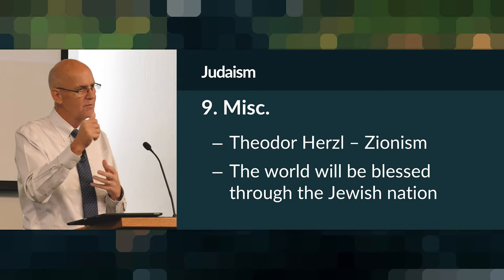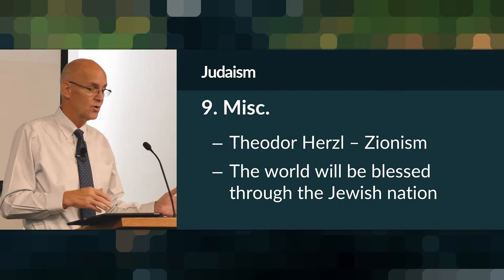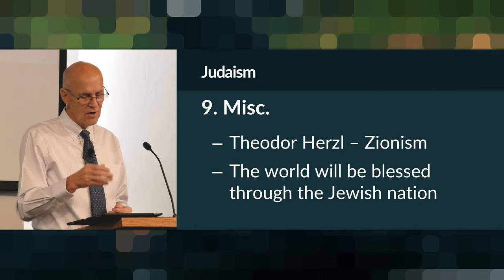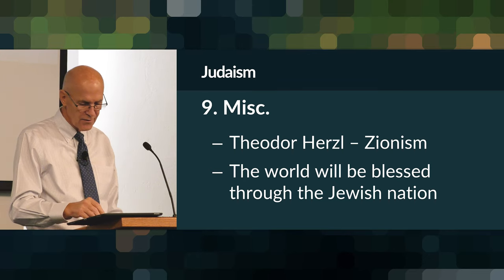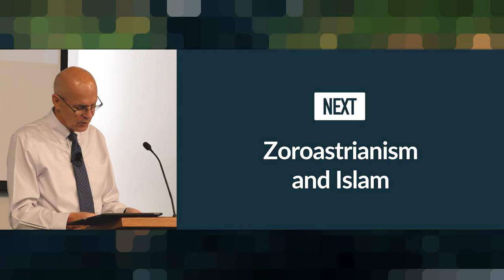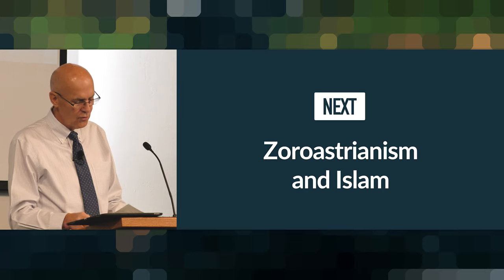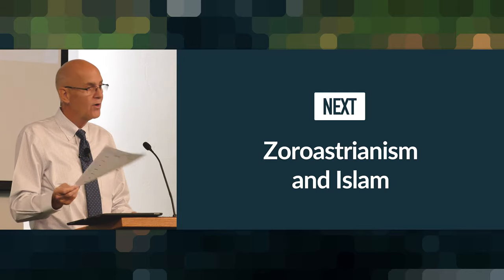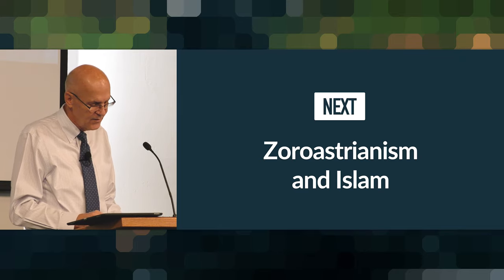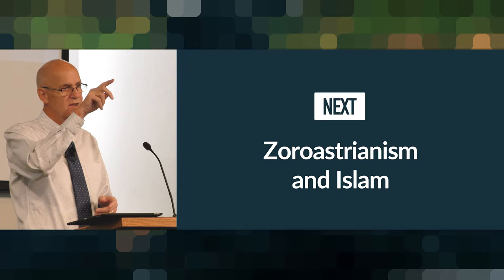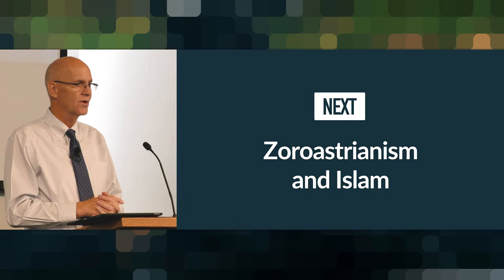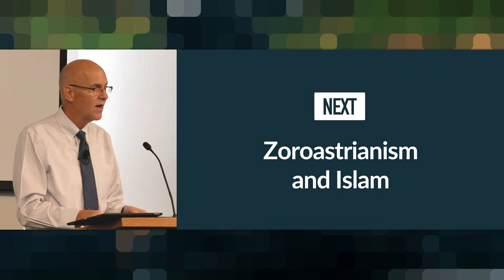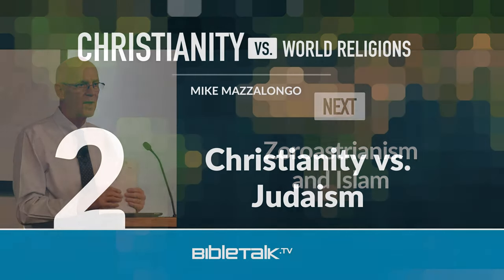So there you go — just a thumbnail sketch of a religion. If you're watching and you're a Jewish person, please don't be offended — the whole point is just to give a sampling of each religion so they can be compared one to another. Next time we get together we're going to do two more religions in the Near Eastern group: Zoroastrianism and Islam. The worksheets are online at BibleTalk.tv — go to Christianity versus World Religions and scan down to lesson two. All the material is there. Just print out a sheet and use it for the next lesson. Thank you for your attention, and we'll see you next time, either online or in person.